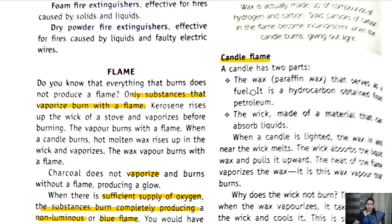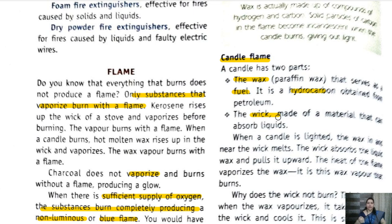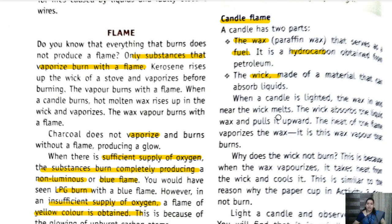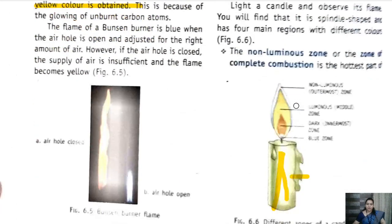The wax acts as a fuel and contains hydrocarbon. The wick is a black thread-like structure. As soon as we burn the candle, the wax gets vaporized and travels up the wick. When the candle is lit, we can observe various types of zones depending on the supply of oxygen.